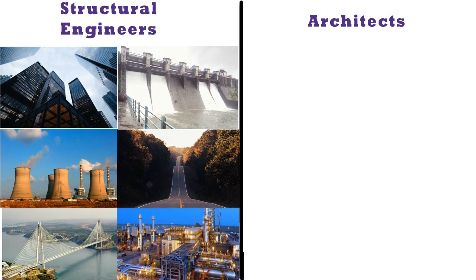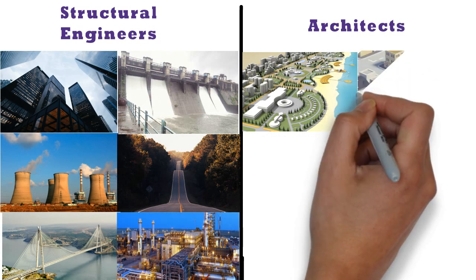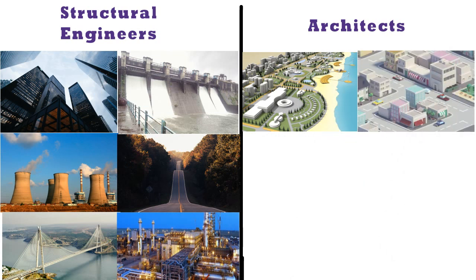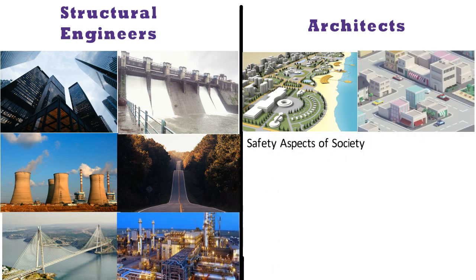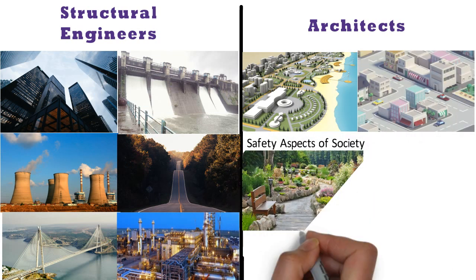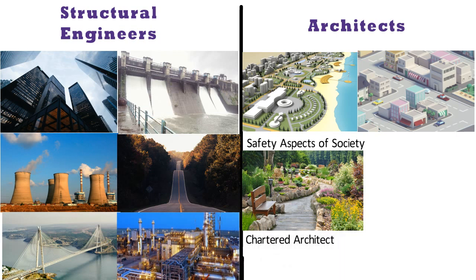On the other hand, the different types of areas the architect is involved in are town planning, smart city projects, safety aspects of society, buildings and landscaping. One needs to obtain a license and can also become a chartered architect.